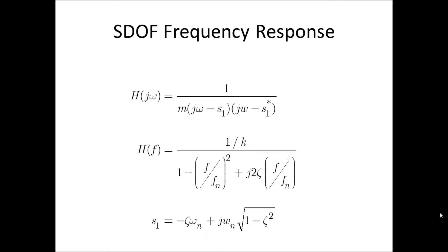The frequency response of an SDOF system can be written in several different ways. Here are two of the ways. So, either we write it as h of j omega, which is then a function of 1 over the mass m times j omega minus s1 times j omega minus s1 complex conjugate, where s1 is the pole of the frequency of the SDOF system,